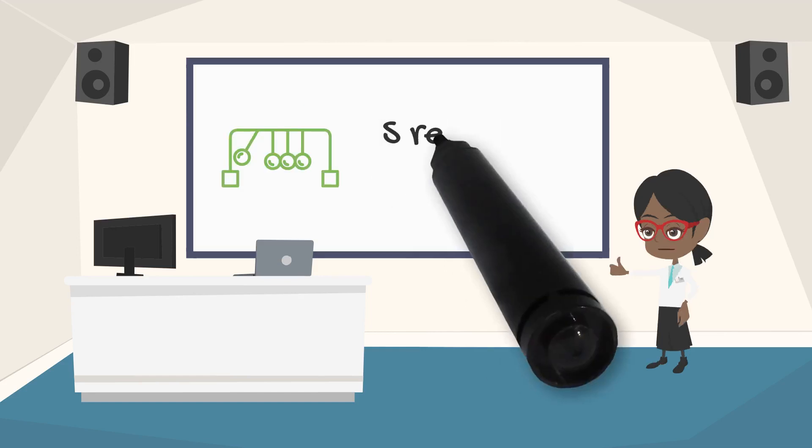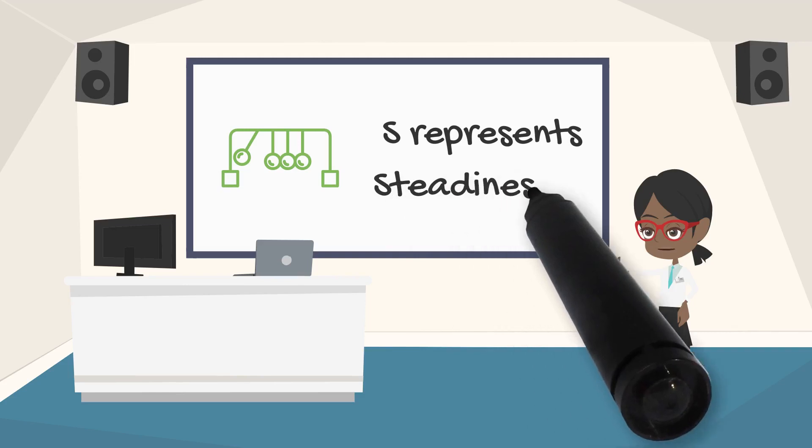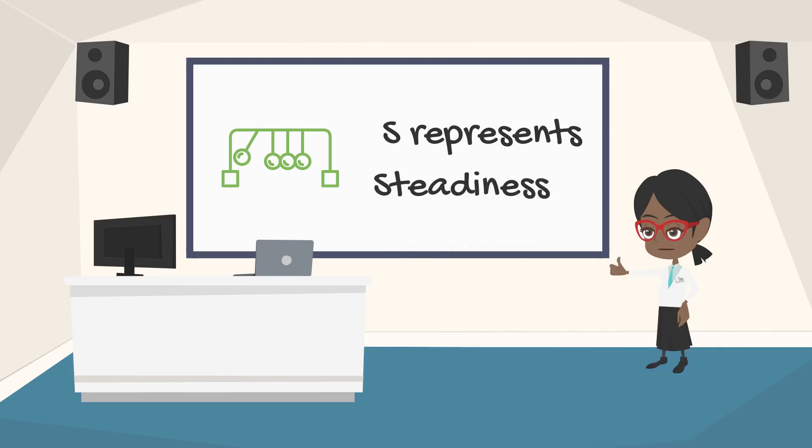The S represents steadiness. This is a reflection of your consistency and how you respond to the pace of the environment. The high S wants a more predictable environment where they can finish what they start while the lower S will want a faster-paced environment.